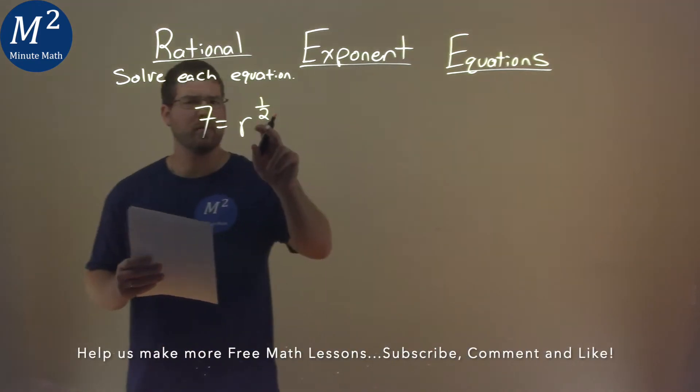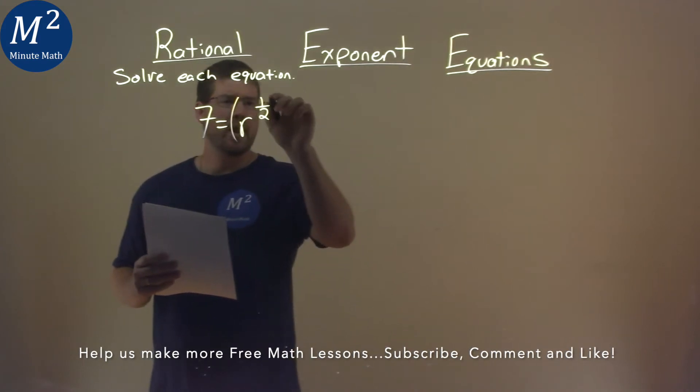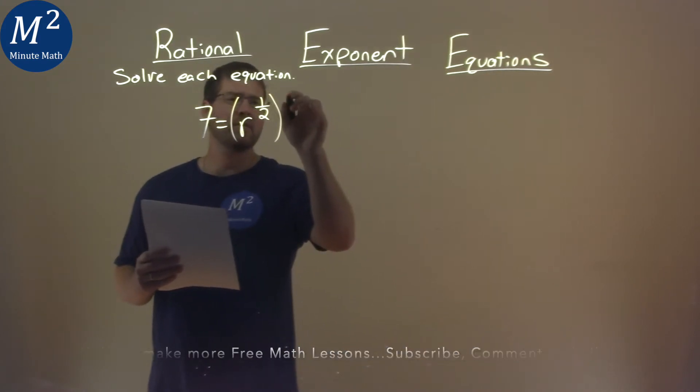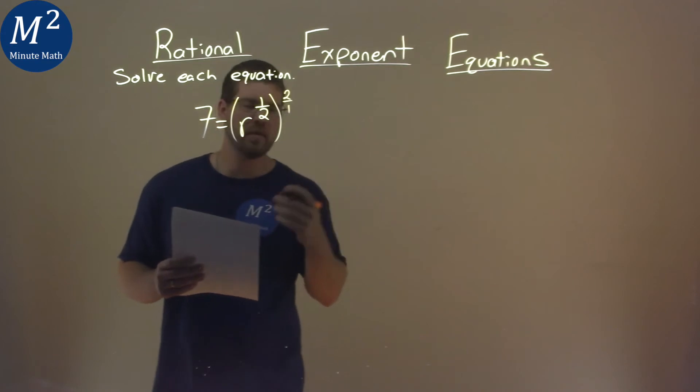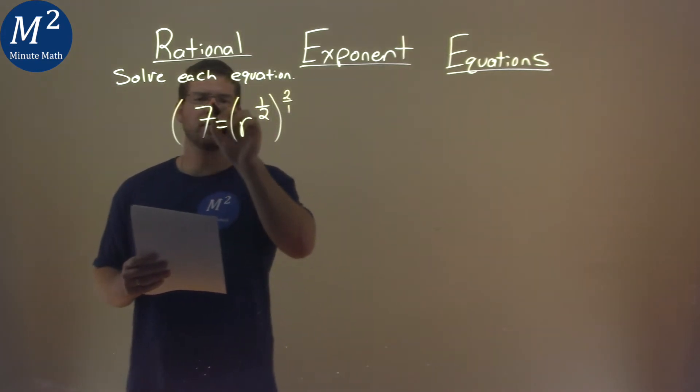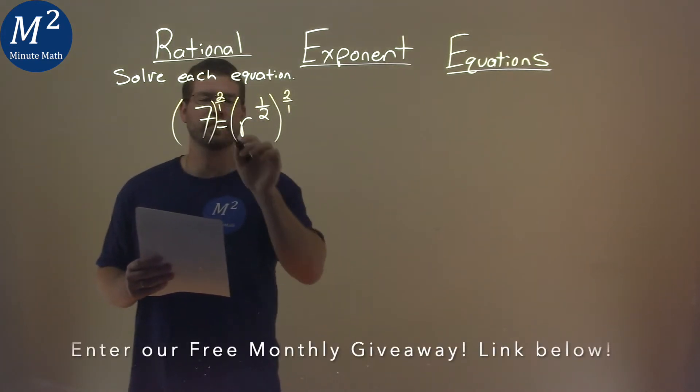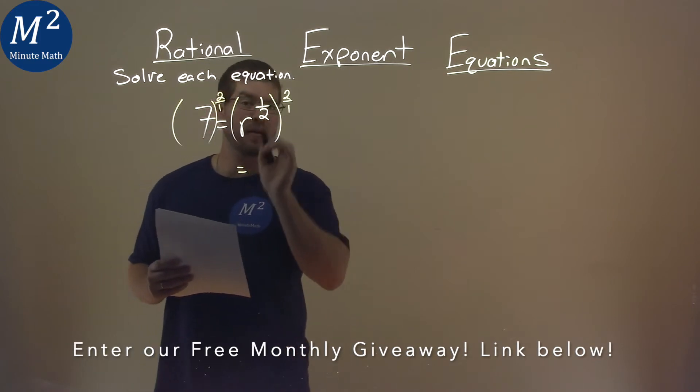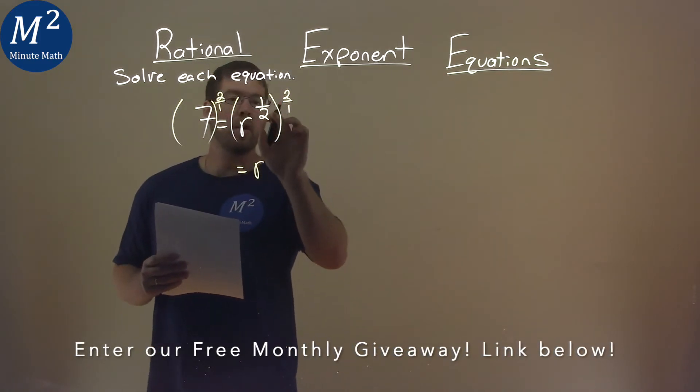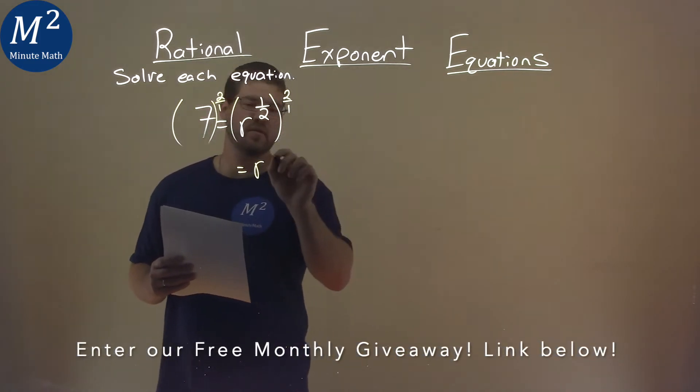Well, I start with my exponent 1 half power. To get rid of that, I raise both sides to the 2 over 1 power, or the second power. But make sure it goes to both sides. This cancels out the exponent for the r. 1 half times 2 over 1 is just 1.